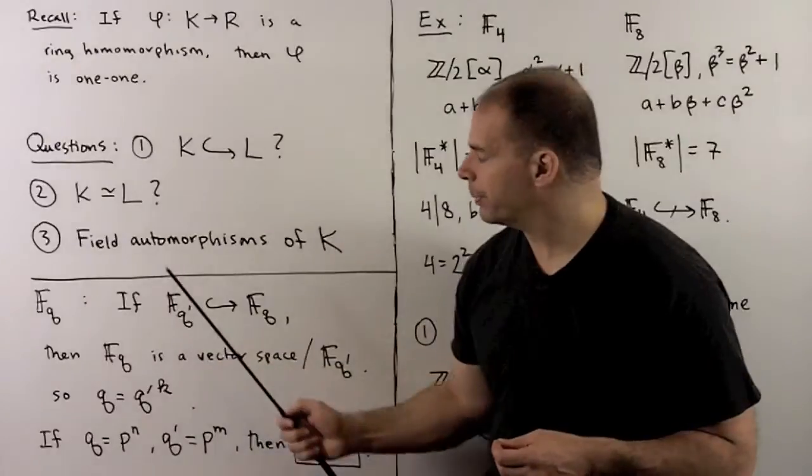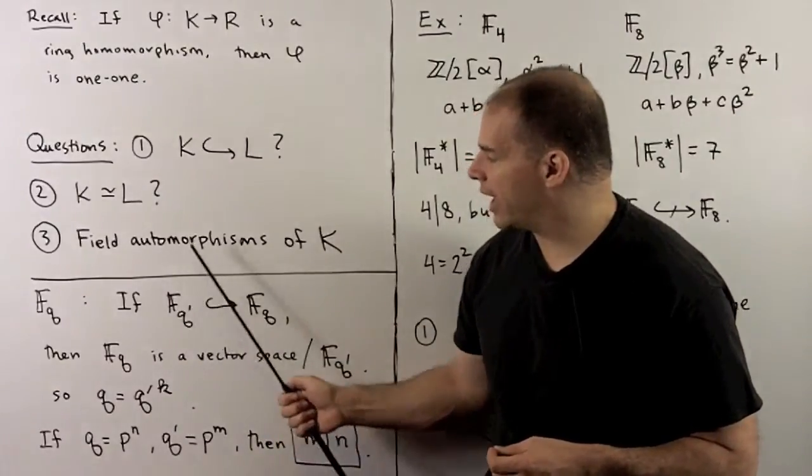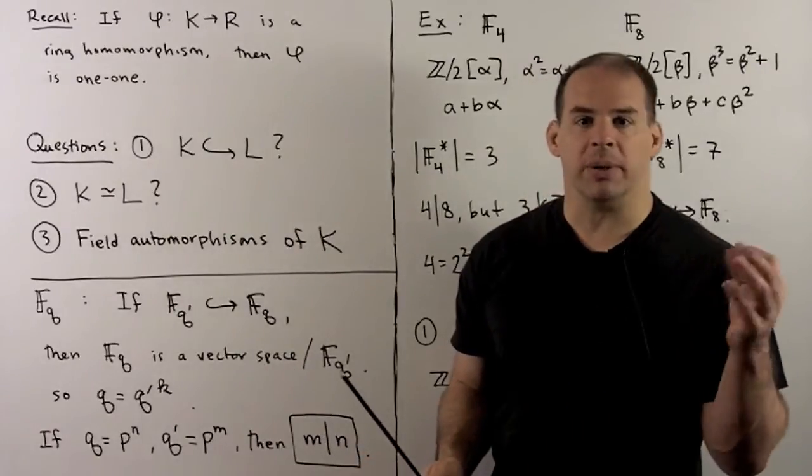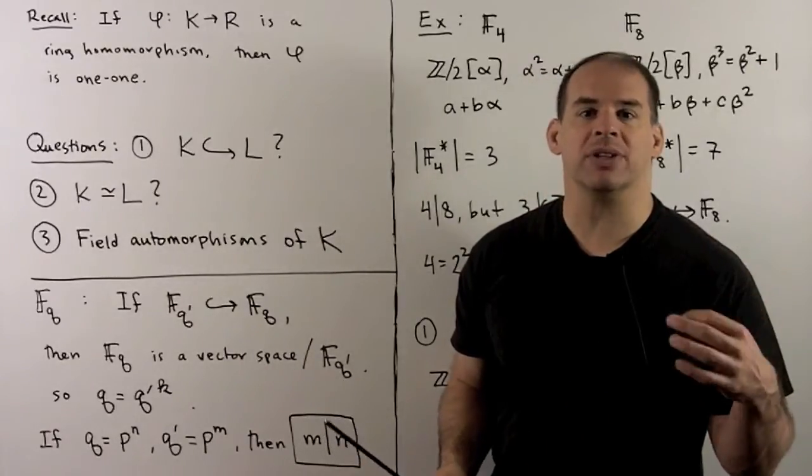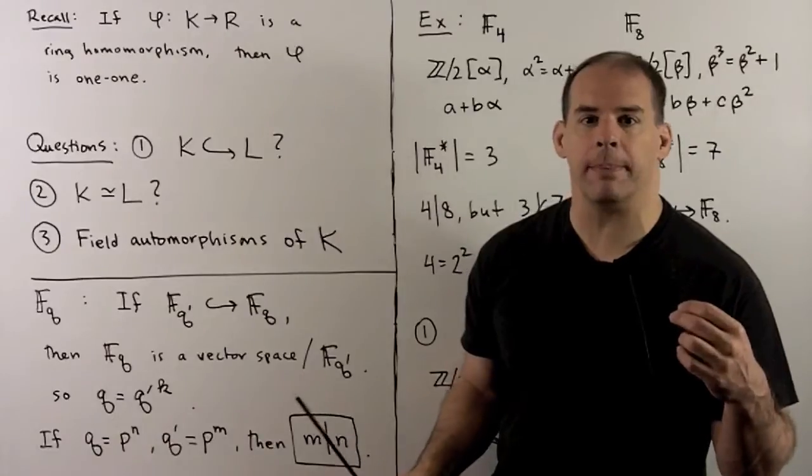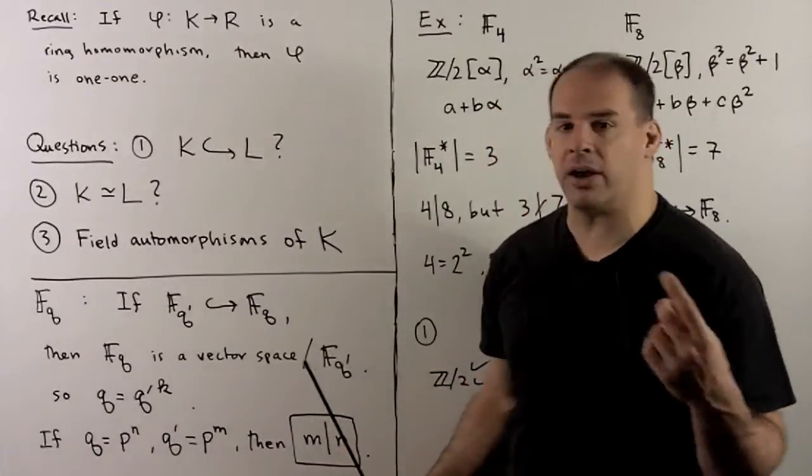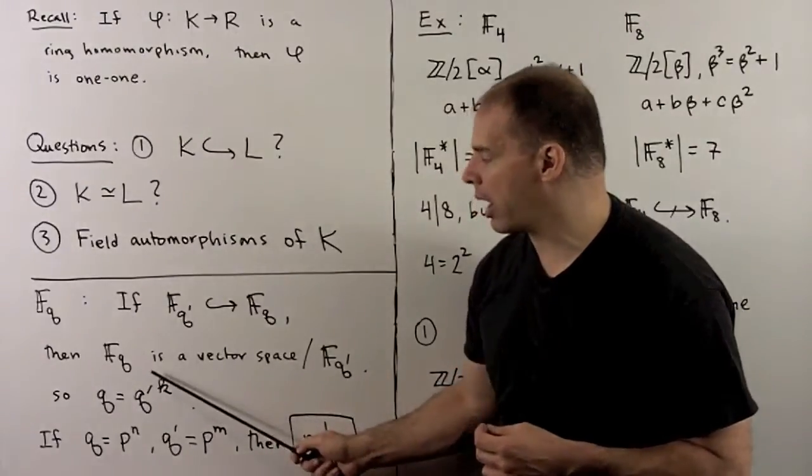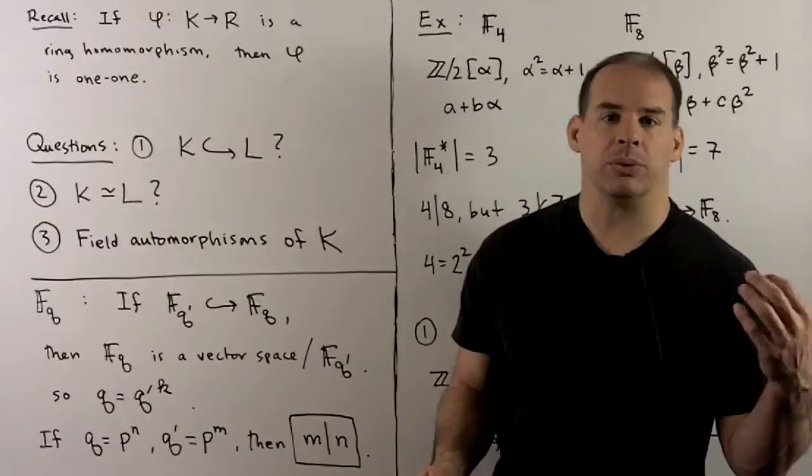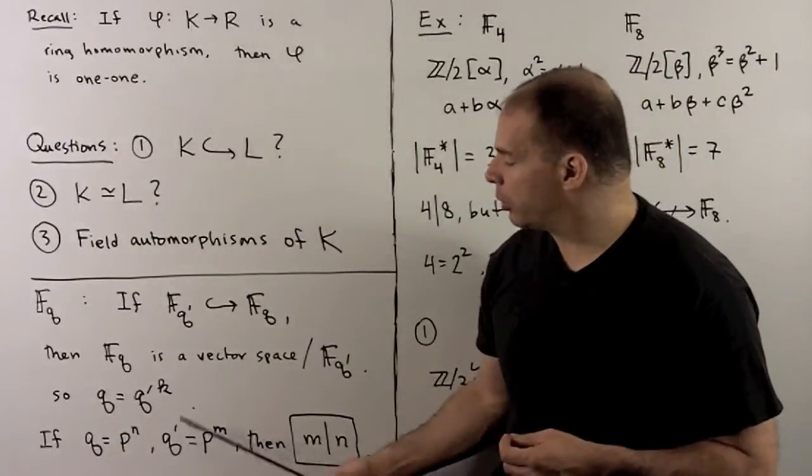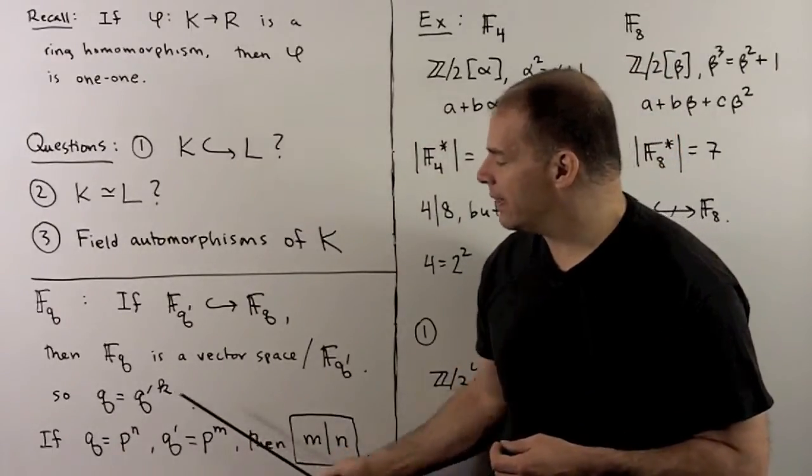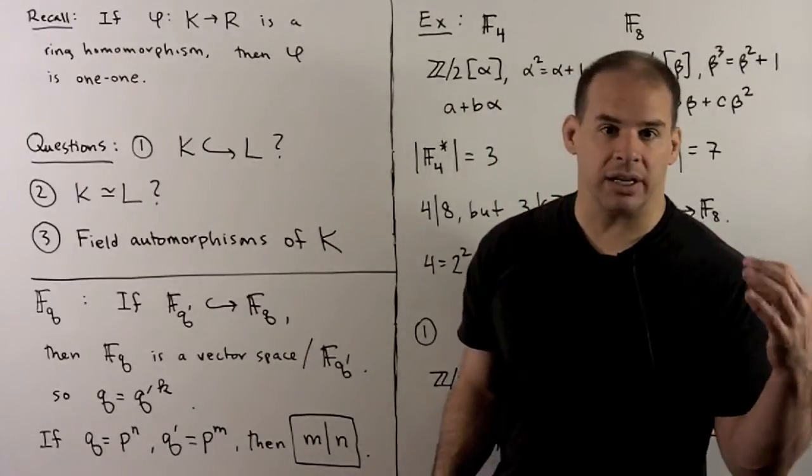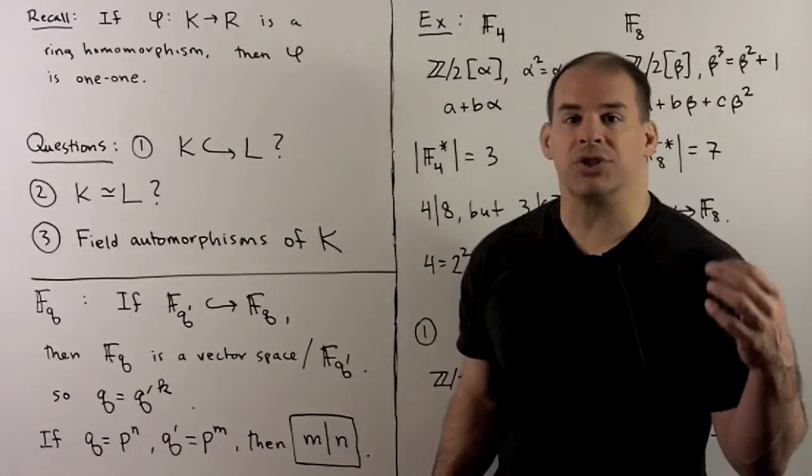If we focus on F_q's, when is F_q prime a subfield of F_q? Using the same argument as before, we'll have F_q as a vector space over F_q prime. We can choose a basis, and then count elements, then we see that q is equal to some power of q prime. Now, q is equal to p to the n, q prime is equal to p to the m, then that'll mean that m has to divide n. That's a necessary condition. We'll see later on that it's also sufficient.